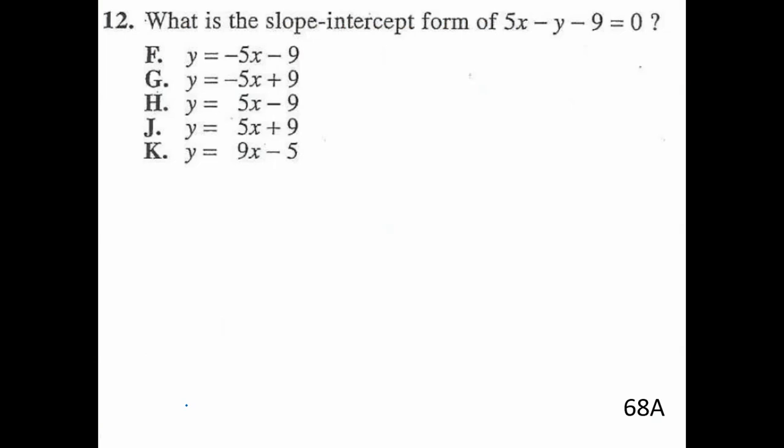So to find slope intercept, as you can see, all five of your choices are in y equals. So our goal is going to be to get anything that's not a y and move that to the right side. So if we had 5x, you would need to eliminate that with a minus 5x. So you'd have minus 5x on the right. You have a minus 9, so we need to add 9. So you're going to add 9 on the right.